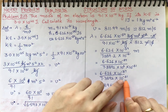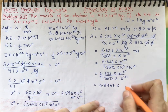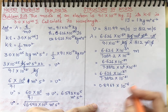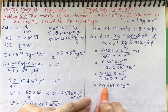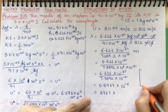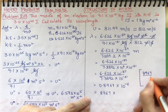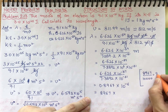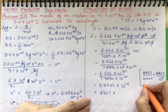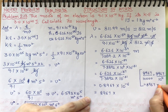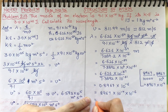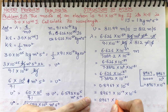We have 10⁻³⁷ in the numerator and 10⁻³¹ in the denominator, so the exponent becomes −37 + 31 = −6. So λ = 0.8967 × 10⁻⁶. We can write 0.8967 as 8.967 × 10⁻⁴, so λ = 8.967 × 10⁻⁴ × 10⁻⁶ = 8.967 × 10⁻¹⁰ meter.